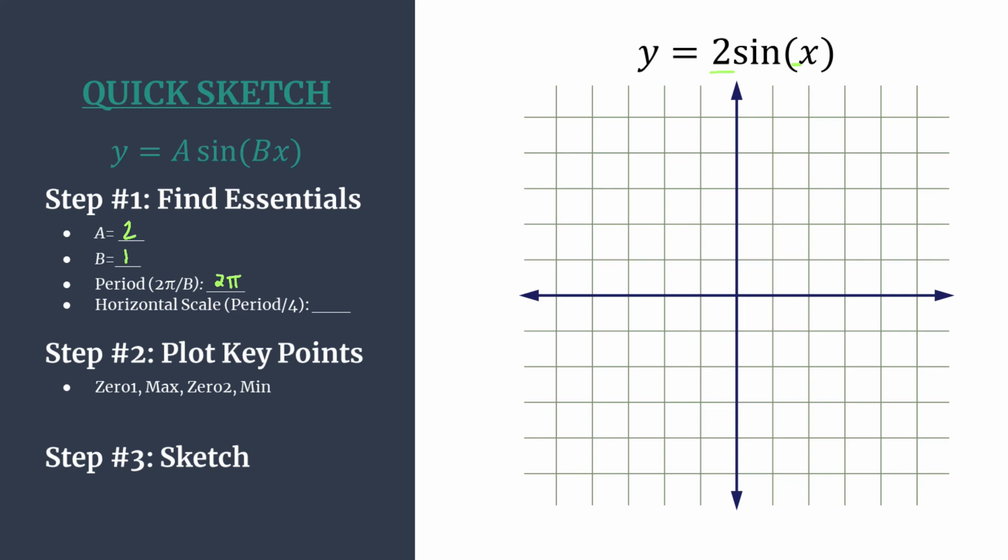To make this really easy on ourselves when we're graphing, we're going to take our period and divide it by four so that each of our key points in step two lines up nicely with one of our tick marks horizontally. So two pi divided by four simplifies down to pi over two. We will count by one pi over two.